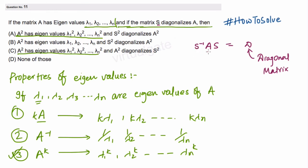A was not a diagonal matrix, but by multiplying S⁻¹ and S around it, we get a diagonal matrix. We say that S is diagonalizing it.